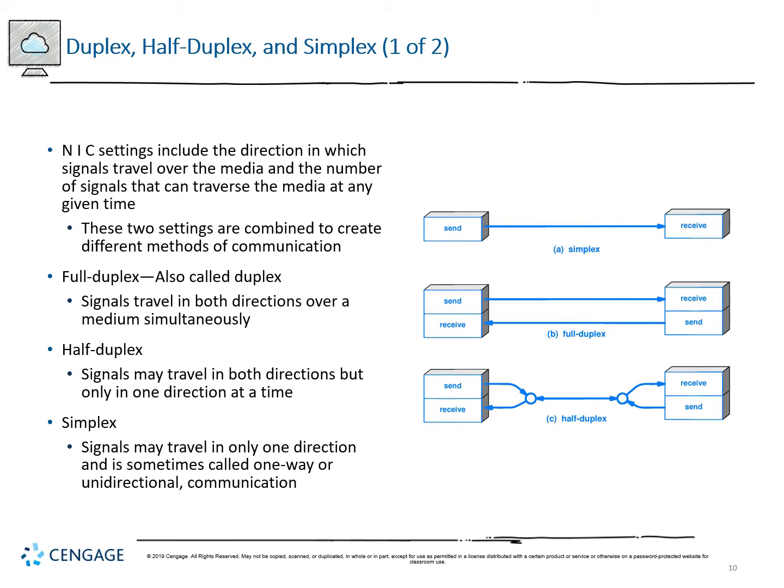When things are being transmitted we have to deal with how transmissions communicate over shared mediums. The NIC includes the direction signals can travel and the number that can travel at a given time. Full duplex allows the signal to send and receive simultaneously over one medium. Half duplex means we can travel in both directions but only one at a time. Simplex is where signals can only travel in one direction — one-way communication.